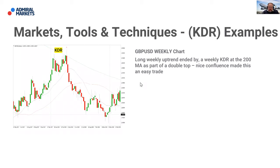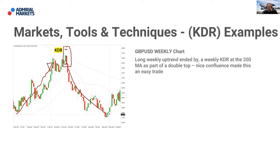That key reversal on the weekly chart closed off that long uptrend of about 14 to 15 months in the pound against the dollar. Price opened, pushed to a new high, but rolled over and closed beneath the low of the previous candle — showing a complete switch in who psychologically controls that market. Price drifted all the way back down from around 140 down to around 126-127. That's quite a nice move if you're able to catch part of it as a trader.